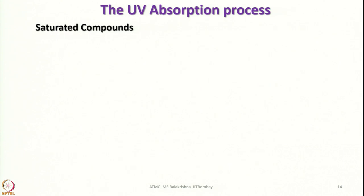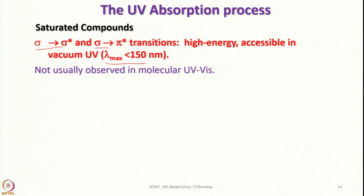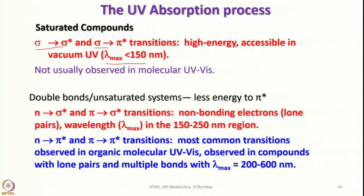For saturated compounds, anticipated electronic transitions are σ→σ* and σ→π*, which are high-energy transitions accessible in vacuum with λmax less than 150 nm and not usually observed in standard molecular UV-visible spectra. For unsaturated systems, less energy is needed for π→π*, and we see n→σ* and π→σ* transitions. With non-bonding electrons or lone pairs, wavelengths fall in the 150–250 nm range. The most common transitions in unsaturated systems are n→π* and π→π*, observed in compounds with lone pairs and multiple bonds.